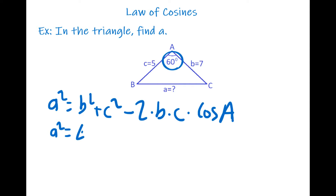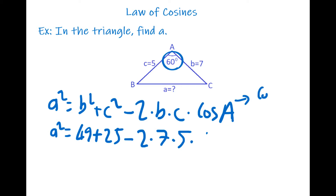So we have: a squared equals 7 squared which is 49, plus 5 squared which is 25, minus 2 times 7 times 5 times cosine 60°. Since angle A is 60°, we use cosine 60°, and we know that cosine 60° equals 1 divided by 2.